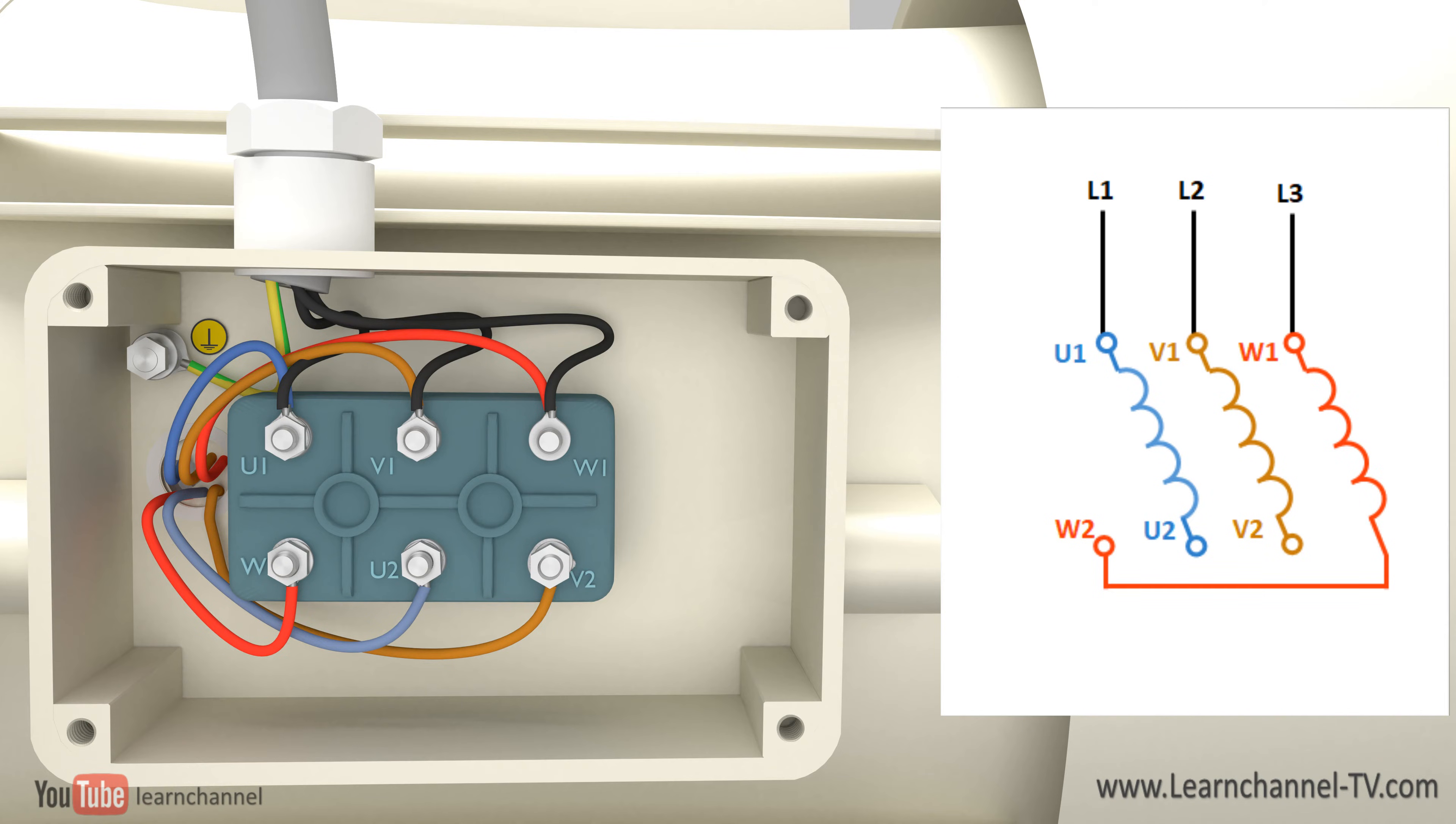In the motor terminal board, it can be determined whether the motor runs in star or in delta. In star, the ends of the windings are connected to each other. In delta, on the other hand, the end of one winding goes to the beginning of another winding.